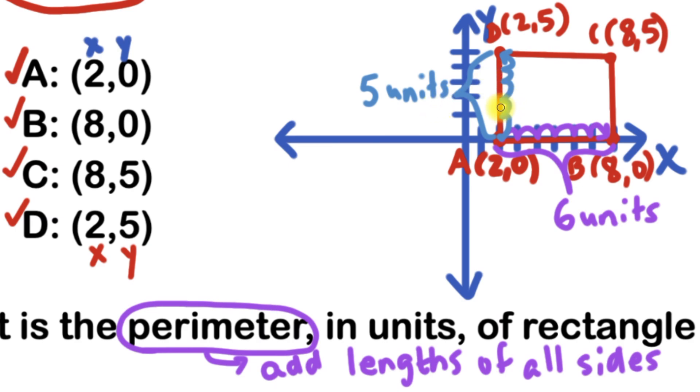And remember, because it's a rectangle, if this side is five units, then that means that this side is five units. And if this side is six units, then this side is six units.